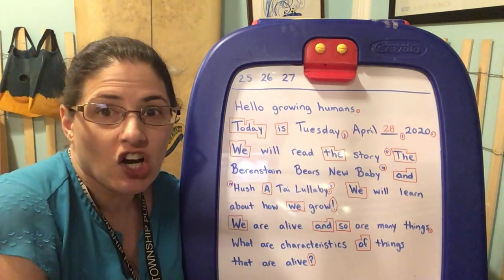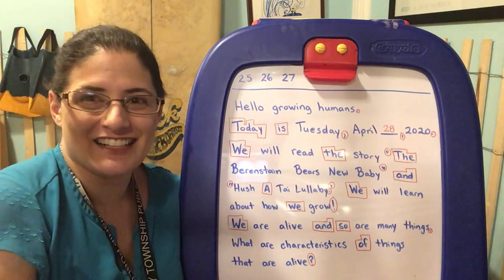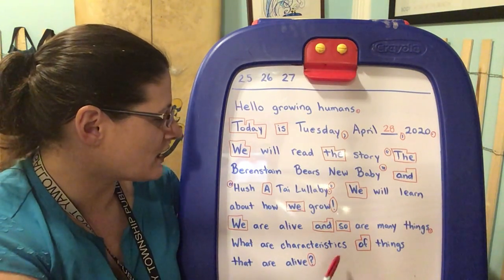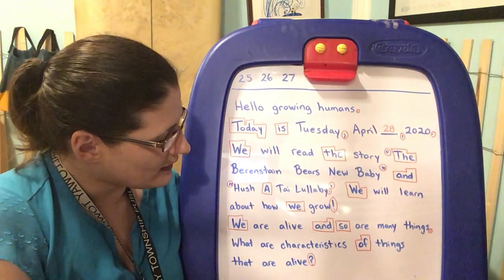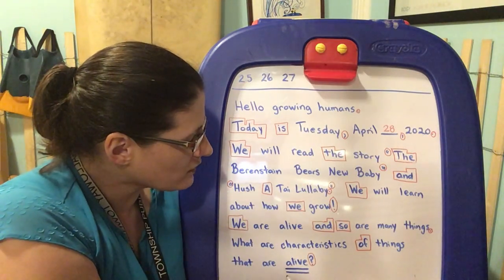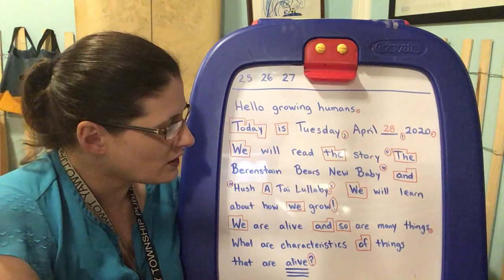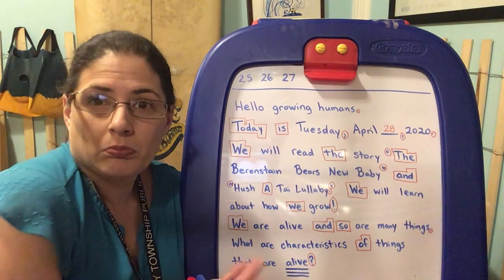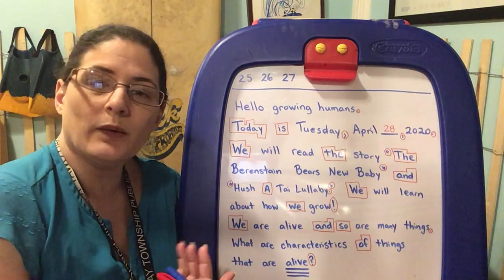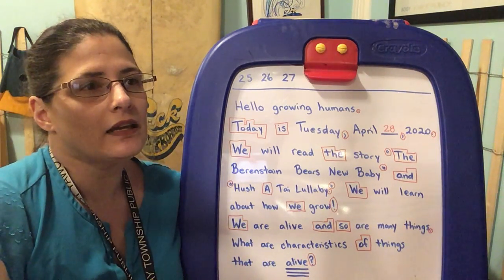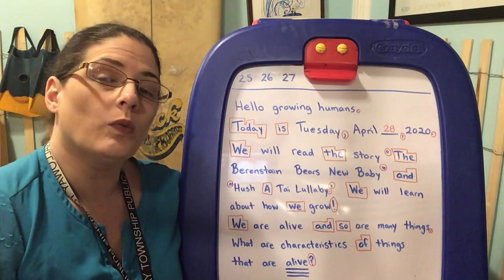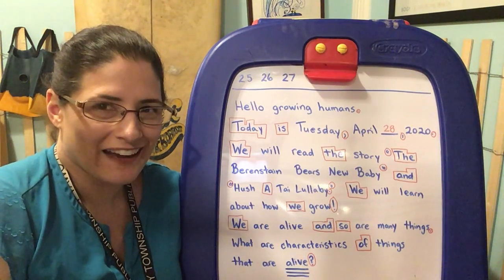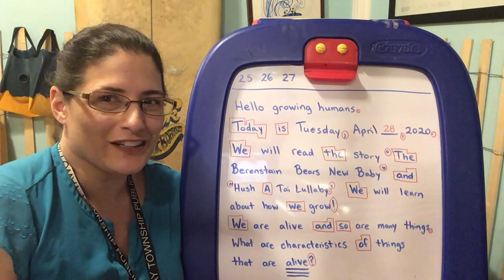A characteristic of a dog is it has fur and a waggly tail and four legs — something that makes something. So what are characteristics of things that are alive? If something were alive, what would it do? What would it need? You think about that one and let me know. I'll see you for a story. Bye.